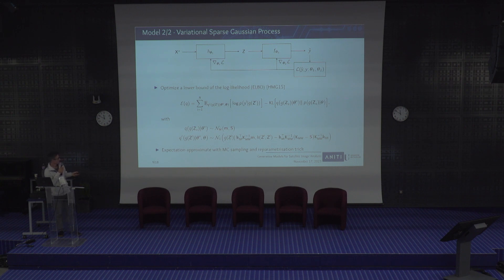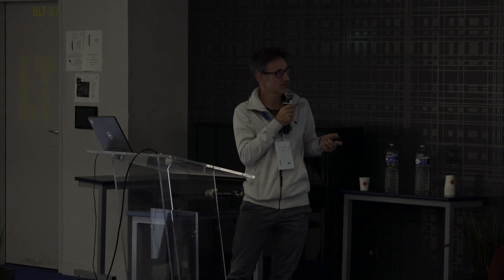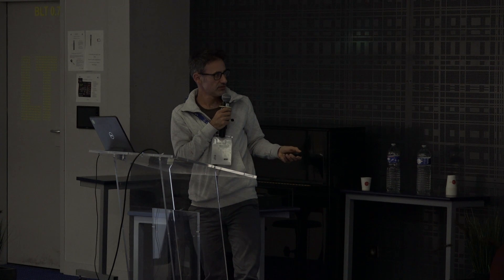We end up with a loss function very similar to that of a variational autoencoder: a regularization term and a term related to the correct or incorrect classification of sample Y. We can solve these using similar approximations as done in a variational autoencoder.